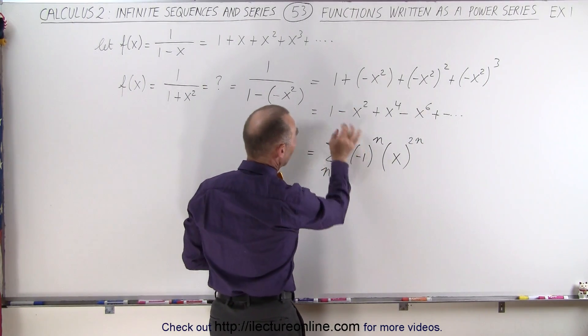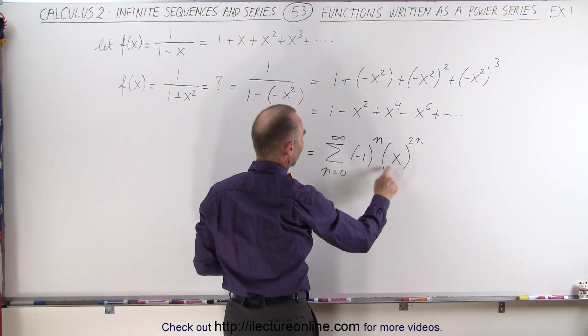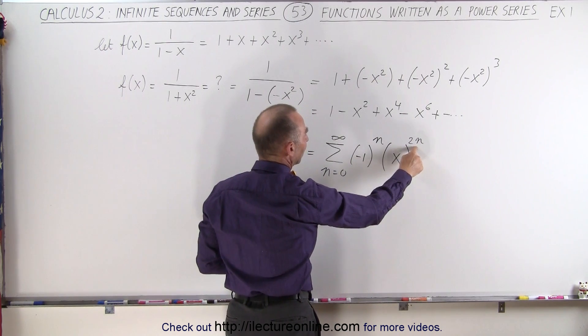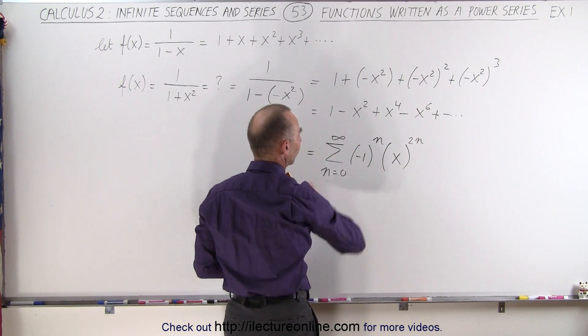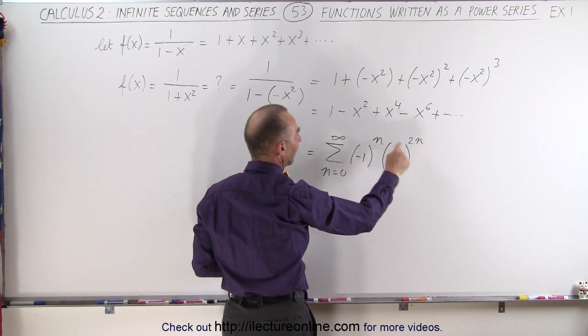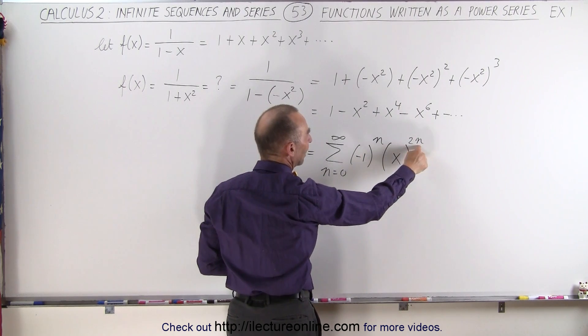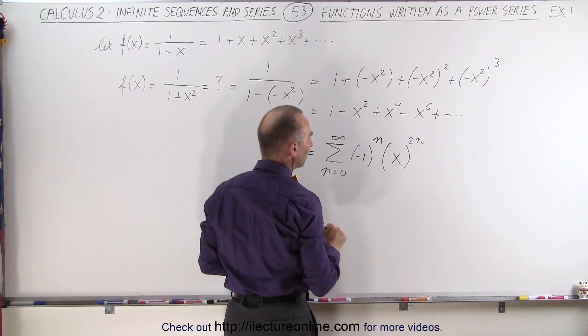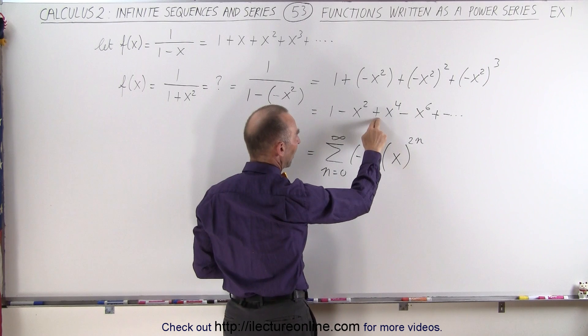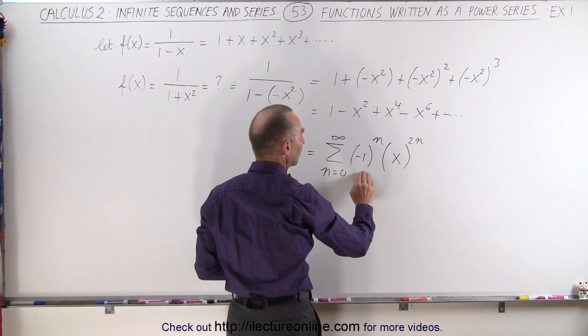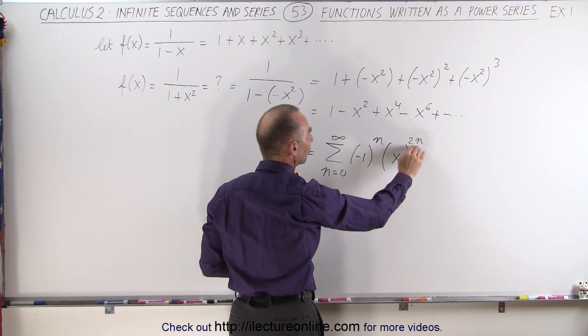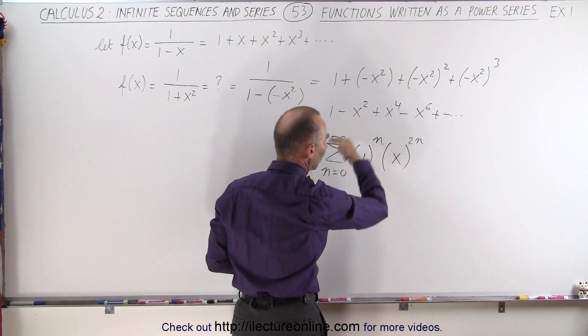So first of all we took care of all the signs. Now when n equals zero, x to the zero power is 1, so we get the first term. When n equals 1 we get the negative and x to the 2 times 1, x squared, gives us x squared. When n equals 2 we get a positive and we get x to the fourth power. When n equals 3 we get the negative again and x to the sixth power, and so forth.